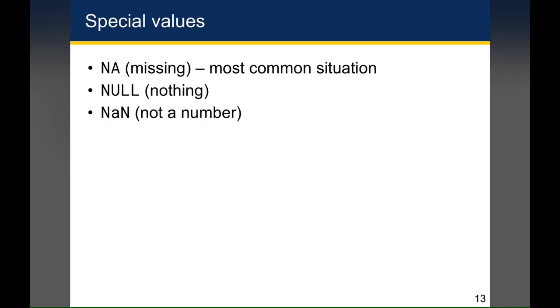Null stands for nothing. In some other languages, null can mean missing, but in R, null has a completely different meaning, and we actually, for the most part, won't deal with it at all. And NaN, which you might see rarely, stands for not a number. So if you type in infinity divided by infinity, which is INF divided by INF with capital I's, you'll get a value not a number because you can't calculate it.